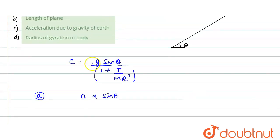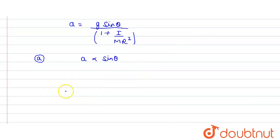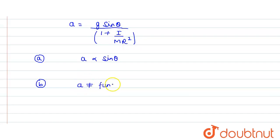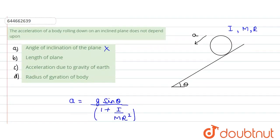For option B — the length of the plane — is there any length appearing in this formula? g is not dependent upon length, theta is not dependent, and I, m, r squared — none of these terms depend on length. So acceleration is not a function of length L of the plane. This can be our correct option, because we need to find what it does not depend upon. Option B is the correct answer.